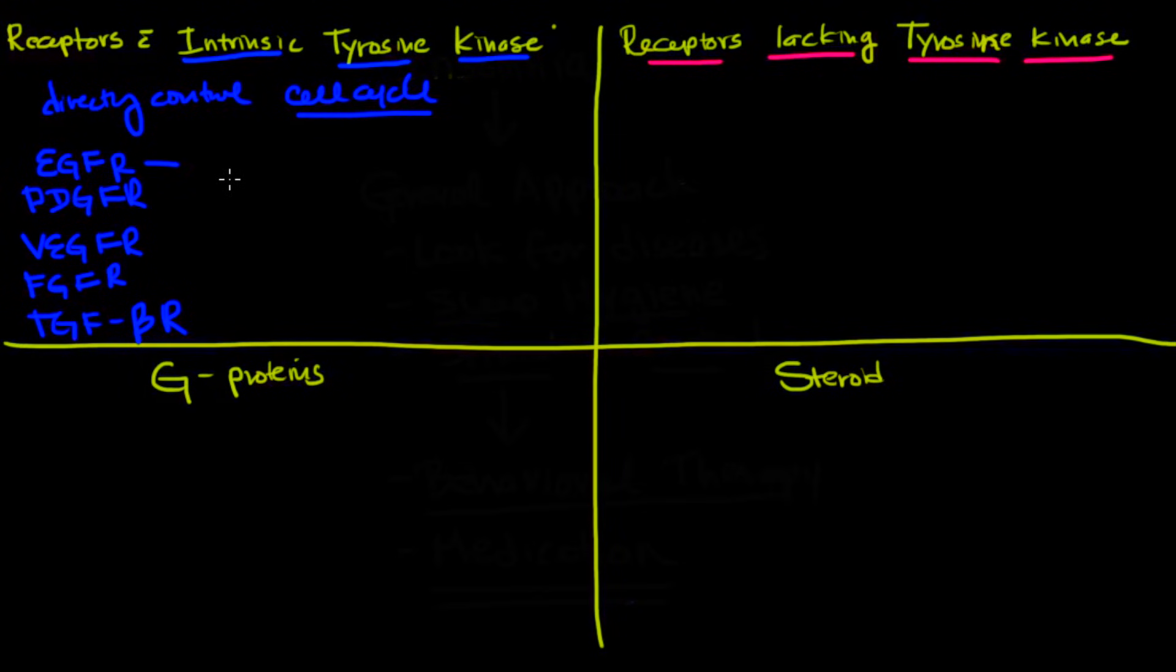So the epidermal growth factor receptor can be blocked by medications. For instance, gefitinib. You'll notice that they all end in Bs. Another one is erlotinib. Another one is afatinib. So these are all receptor blockers. Okay, platelet-derived growth factor, VEGF-R, and FGF-R, and things of that nature. These can be blocked, at least these three right here.